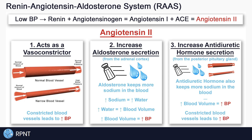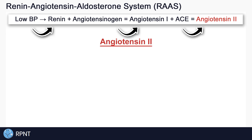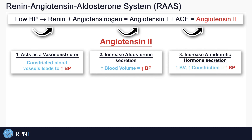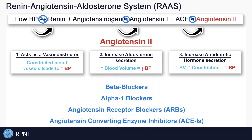So we started with low blood pressure, and look at all these different ways that angiotensin-2 helps to fix that. In summary: in the event of low blood pressure, our kidneys secrete renin to start the chain of events that eventually raises blood pressure. Renin converts angiotensinogen into angiotensin-1, and angiotensin converting enzyme converts angiotensin-1 into angiotensin-2. Angiotensin-2 causes vasoconstriction, increases the secretion of aldosterone, and increases the secretion of antidiuretic hormone — all of which help to raise blood pressure. Keep in mind that if blood pressure gets too high, it increases risk for kidney failure, cardiovascular problems like stroke and heart attacks, and much more. If you have any questions, please let me know in the comments, and thanks for watching.